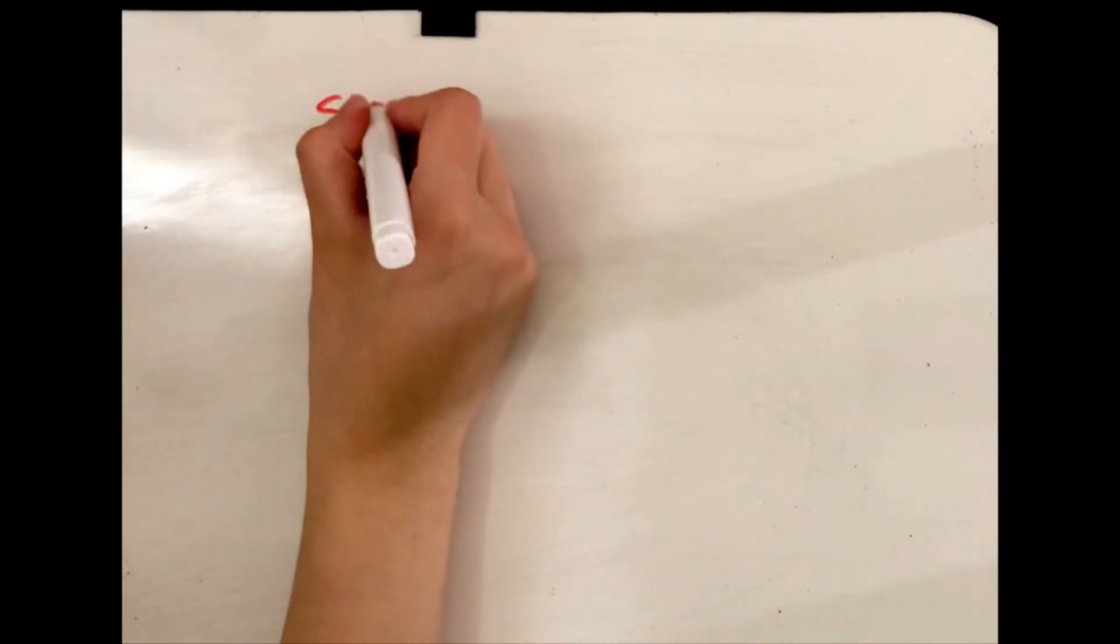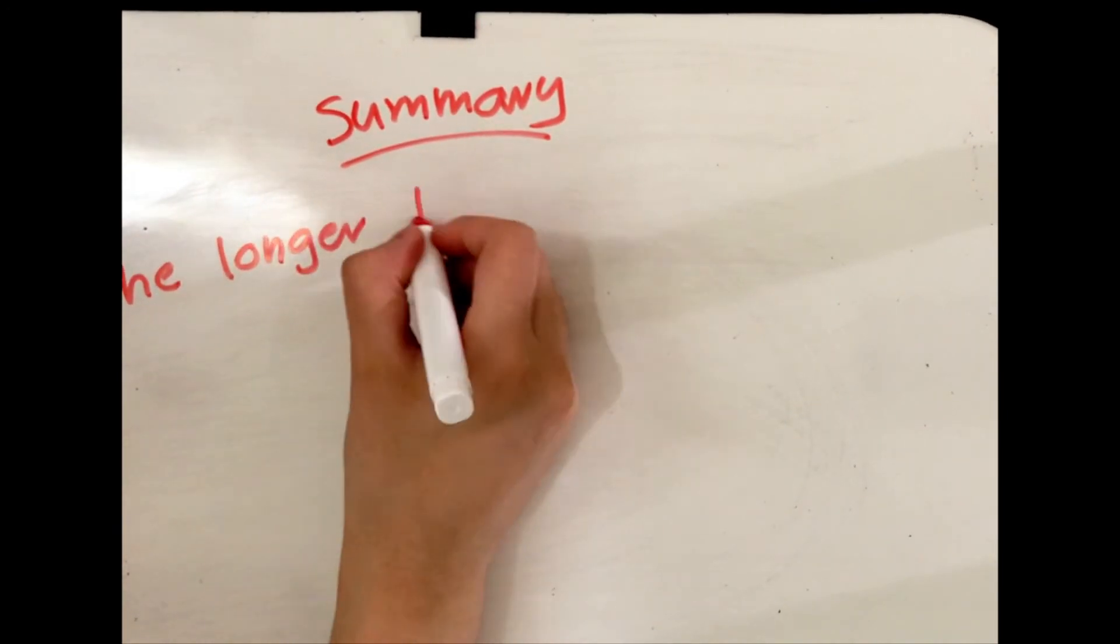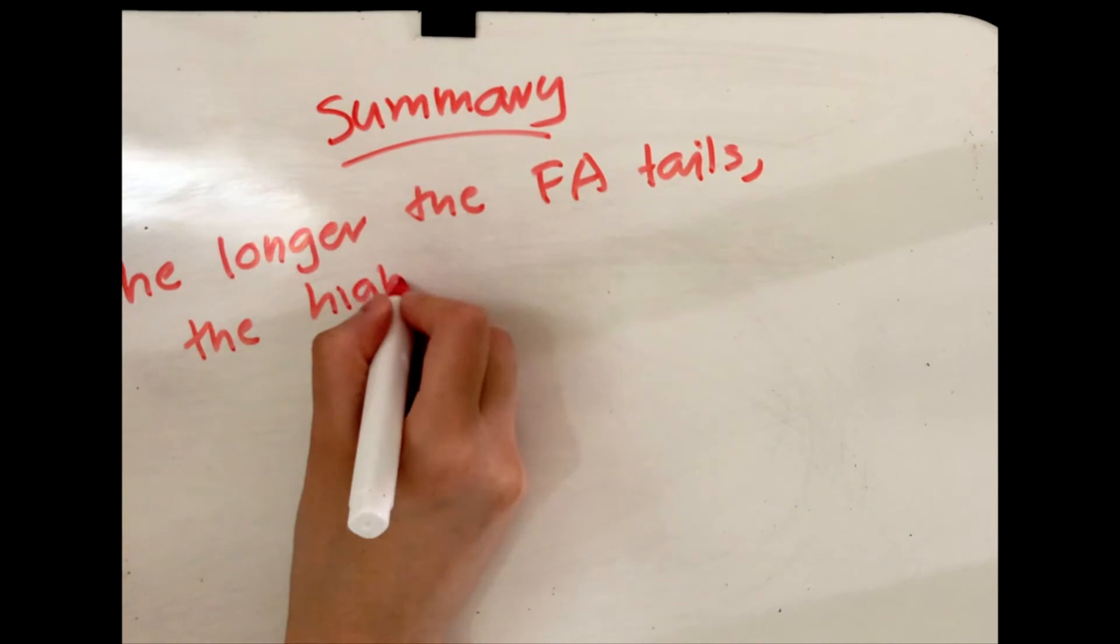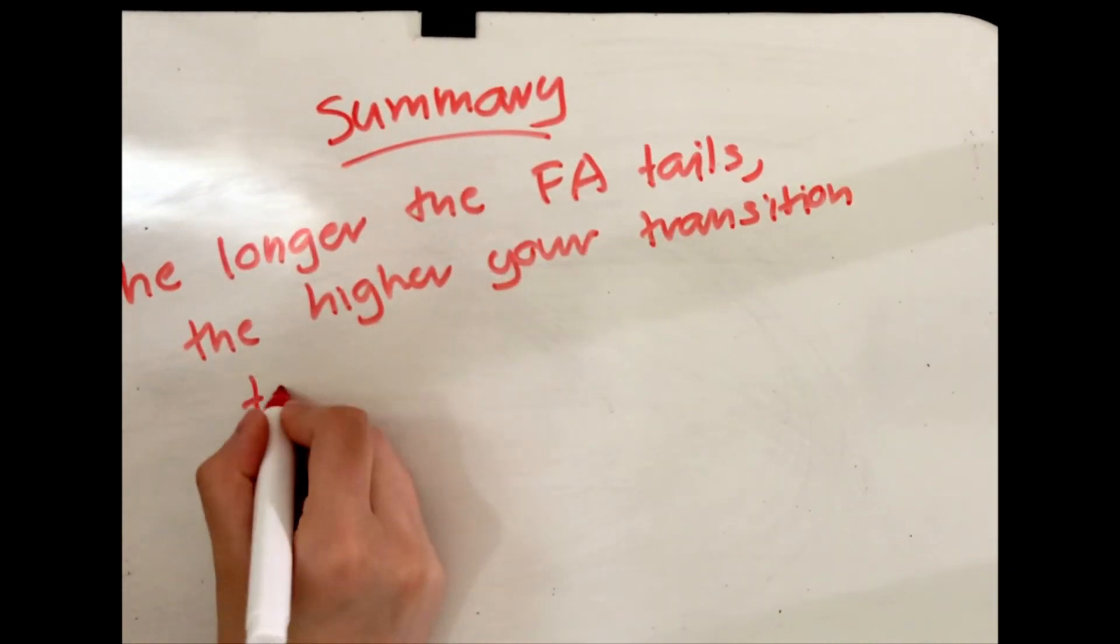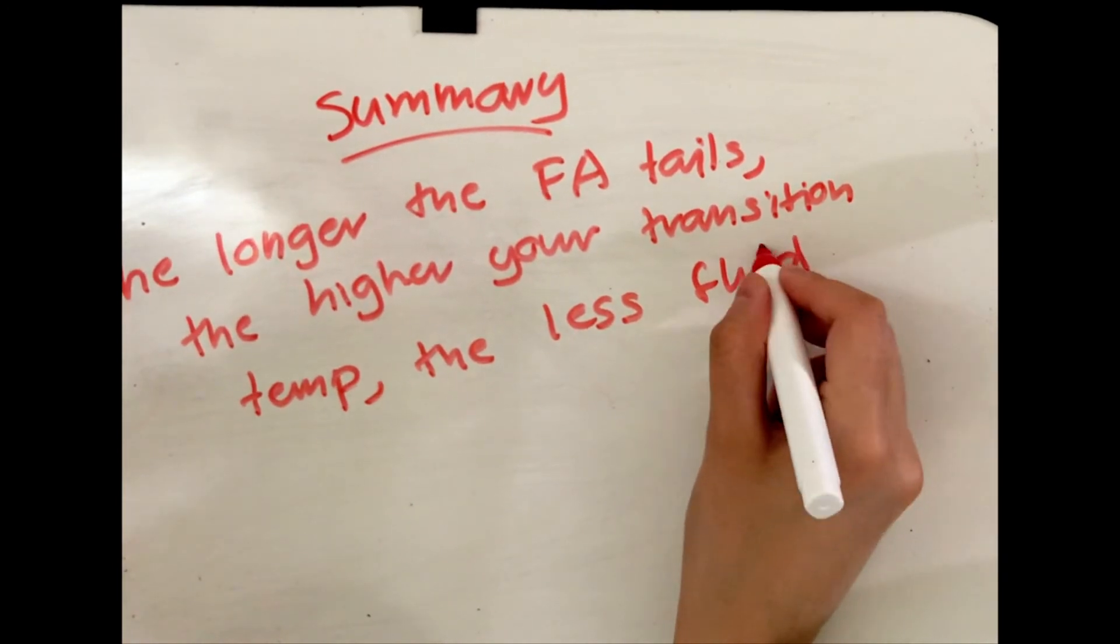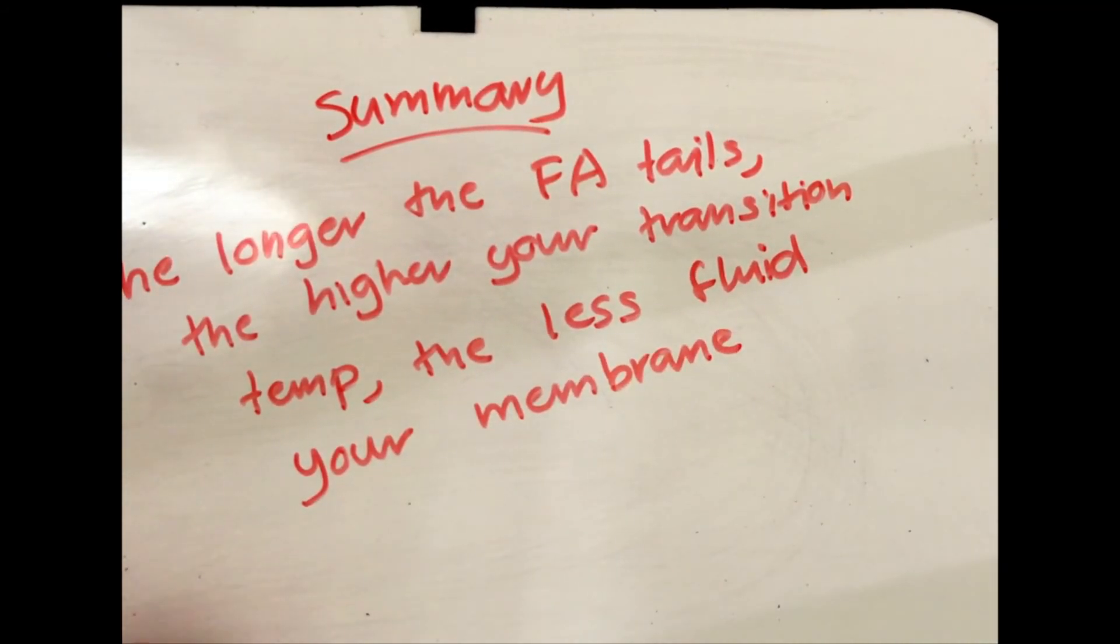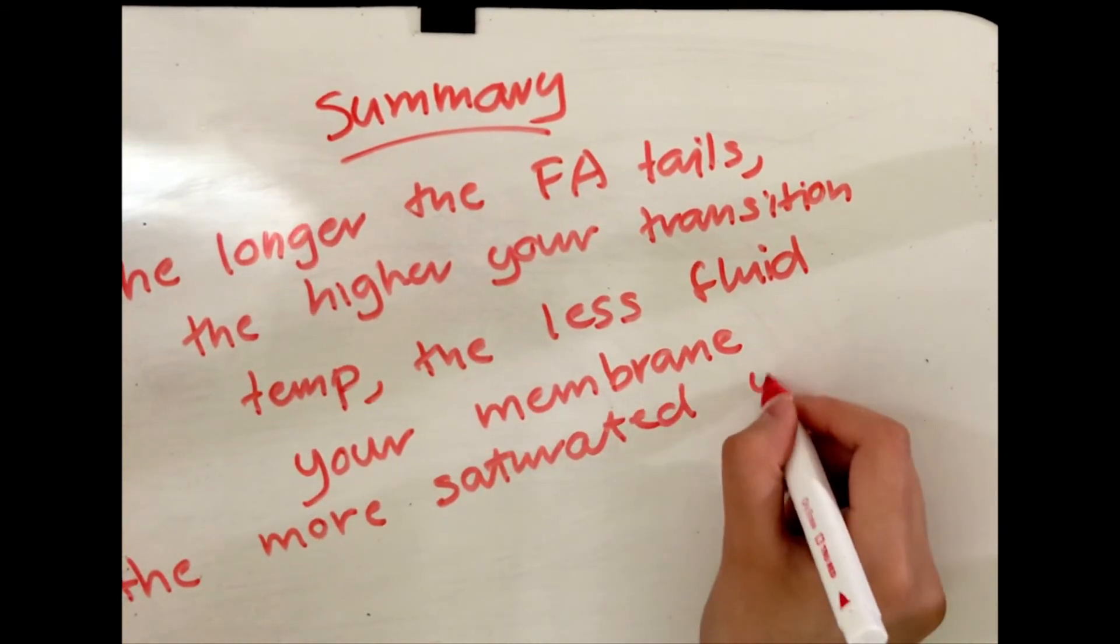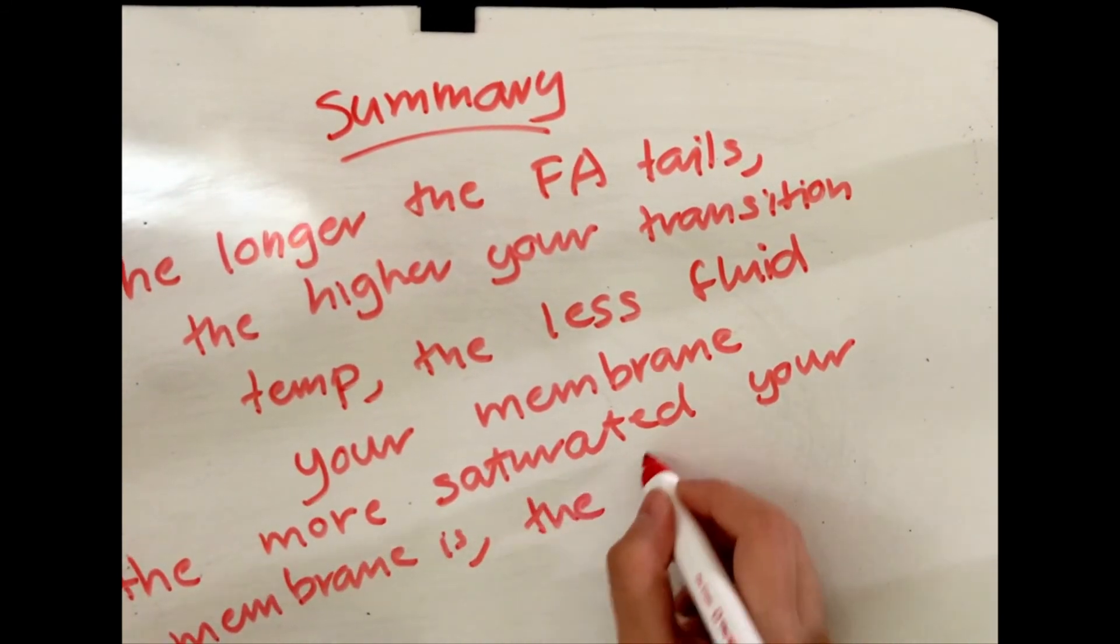What I want you to take out of this video as the summary is that the longer the fatty acid tail, the higher your transition temperature and the less fluid your membrane is going to be. The more saturated your membrane is, the less fluid it's going to be.